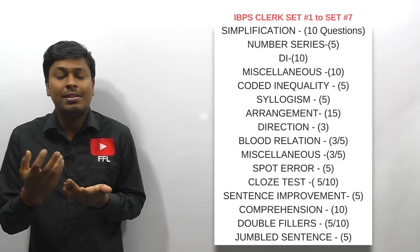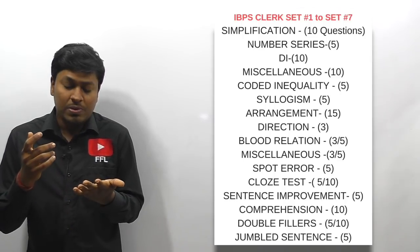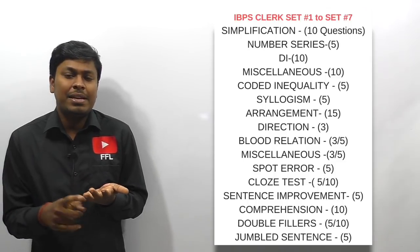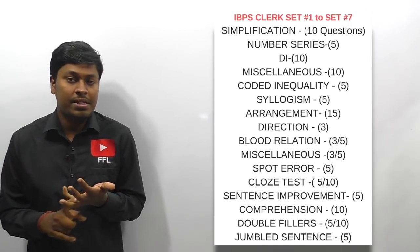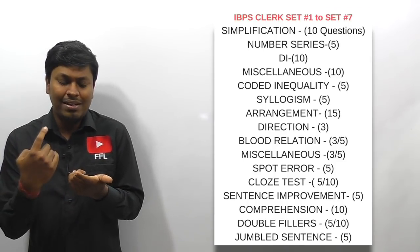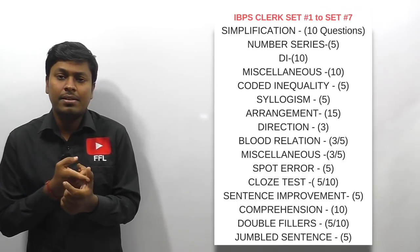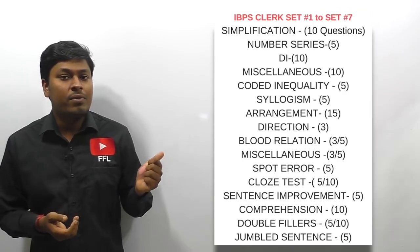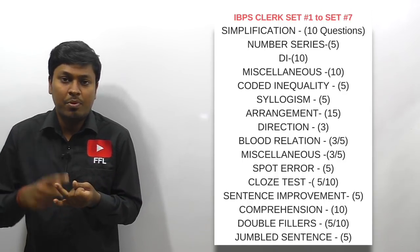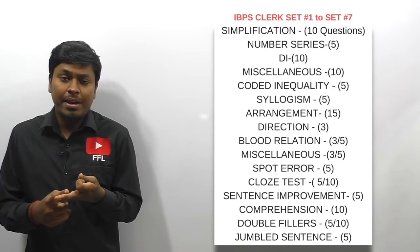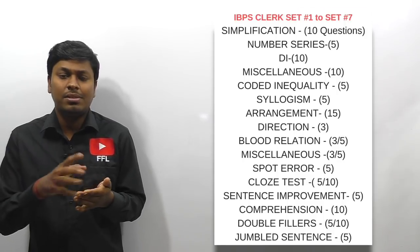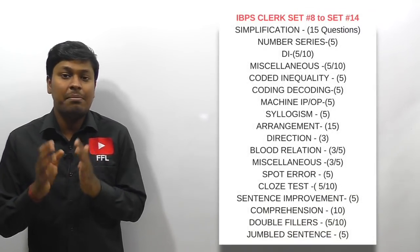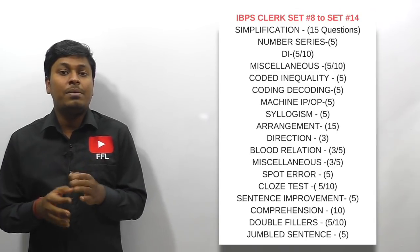In reasoning, some batches received three arrangement questions and some received four arrangement questions, plus syllogism, coding-decoding (3 marks), direction (3 marks), and blood relation (3 marks). For English, this time we focused on sentence improvements, spot the errors, reading comprehension, and para jumbles, among other topics. So the first seven sets are completely based on the previous year IBPS Clerk exam pattern.